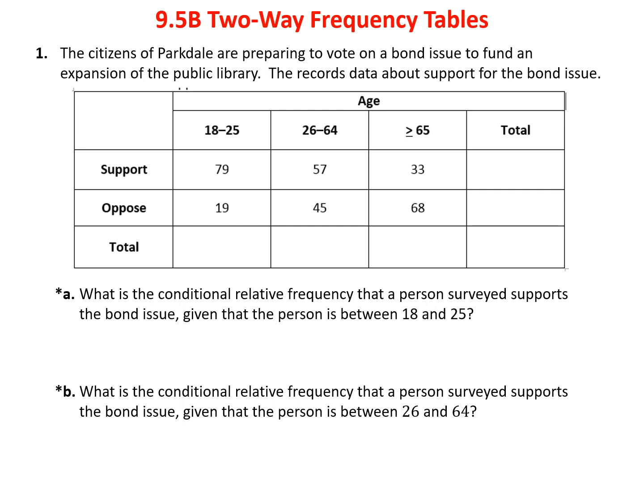Here's an example: the citizens of Parkdale were preparing to vote on a bond issue to fund an expansion of the public library. Data about support for the bond issue is recorded below. First, let's complete the table. The data is broken down by age: 18 to 25, 25 to 64, and older. They were asked whether they support or oppose the bond. The total in support was 169, opposed was 132, and the age group totals were 98, 102, and 101, for a grand total of 301 people surveyed.